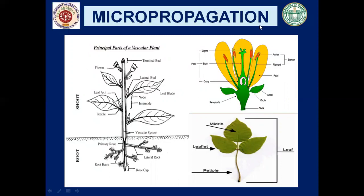From a plant, the terminal bud, axillary buds, flowers, leaf axil, nodal region, leaf blade, root, any part of the stem, lateral or terminal bud, flower portion — all these organs or parts of a plant can be used as an explant in the micropropagation technique of tissue culture.